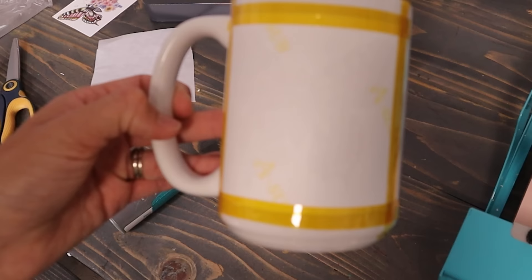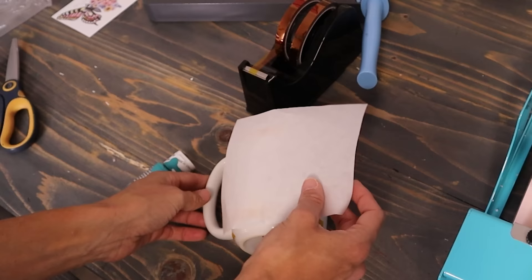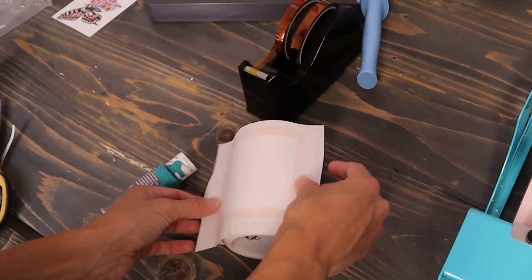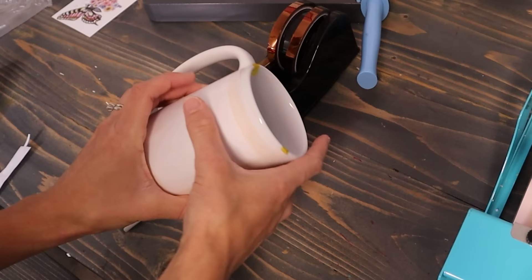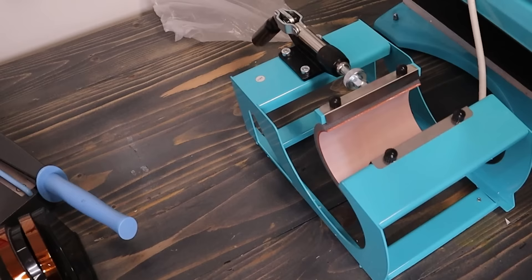And as you can see I have my design taped around my mug exactly where I want it. And now I'm going to take my butcher paper and then you're going to tape that again just on both sides just to keep it down. This just helps hold it in place.